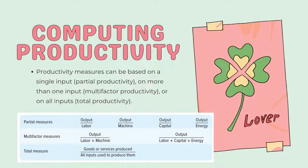For computing productivity, it can be measured based on single input or output — called partial productivity — on more than one input, called multi-factor productivity, or on all inputs, which is called total productivity. Partial measures include output over labor, output over machine, output over capital, or output over energy. Multi-factor measures include output over the sum of labor and machine, or output over the sum of labor, capital, and energy. Total measures are goods or services produced over all inputs used to produce them.